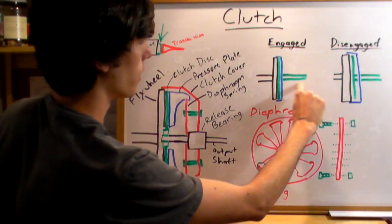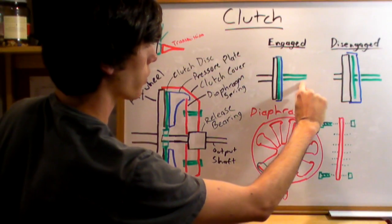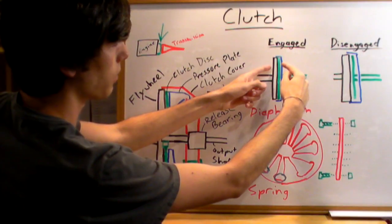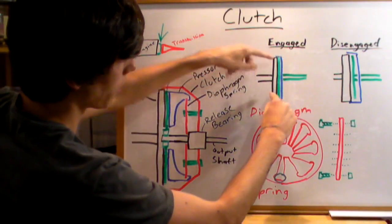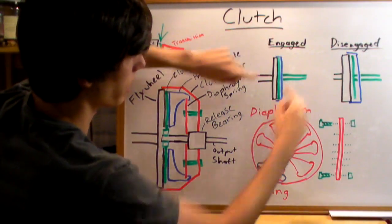And this is the output shaft which is going to your transmission. It's going to be forced to rotate at the same speed that the blue and black here are rotating, the flywheel and the pressure plate.